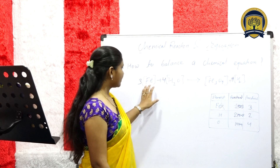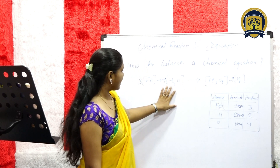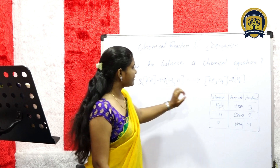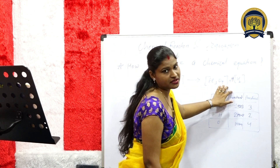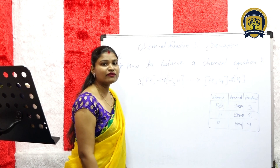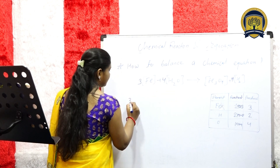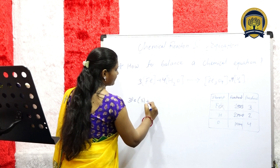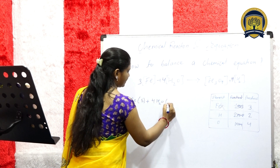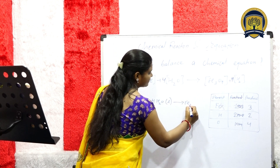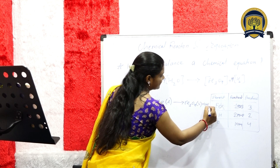Now let's check: there are 3 atoms of iron, 8 atoms of hydrogen, 4 atoms of oxygen on each side. We write this balanced equation with physical states: 3Fe (solid) + 4H2O (liquid) gives Fe3O4 (solid) + 4H2 (gas).